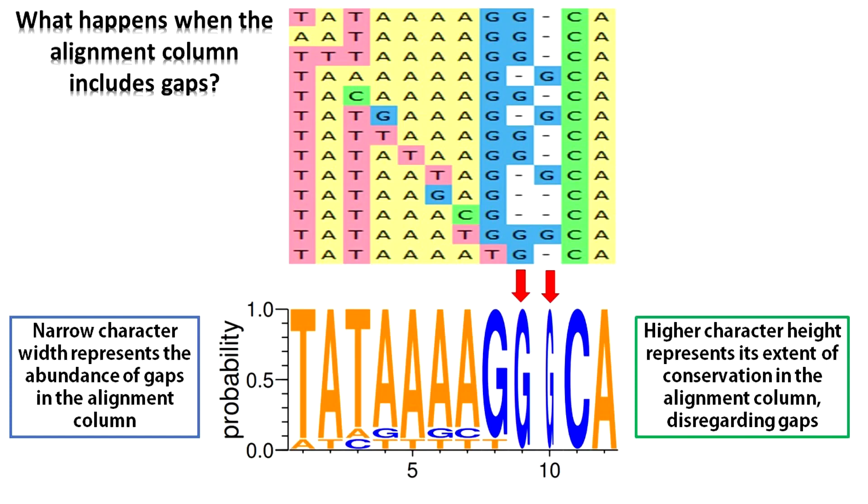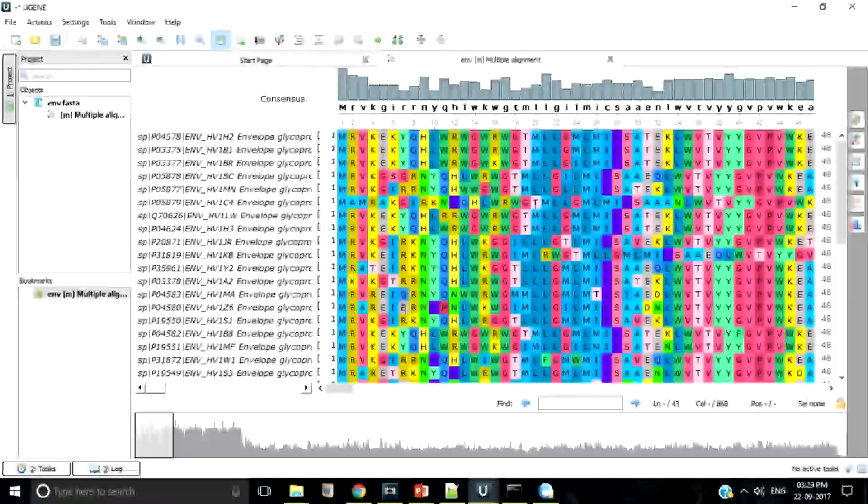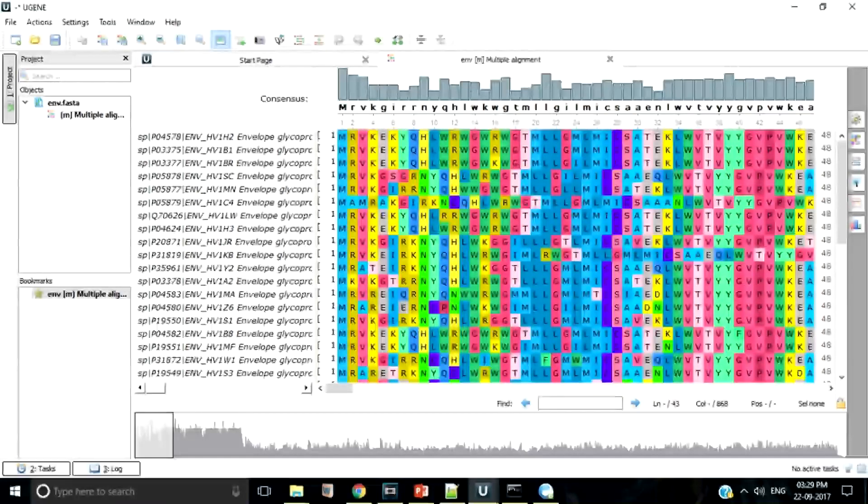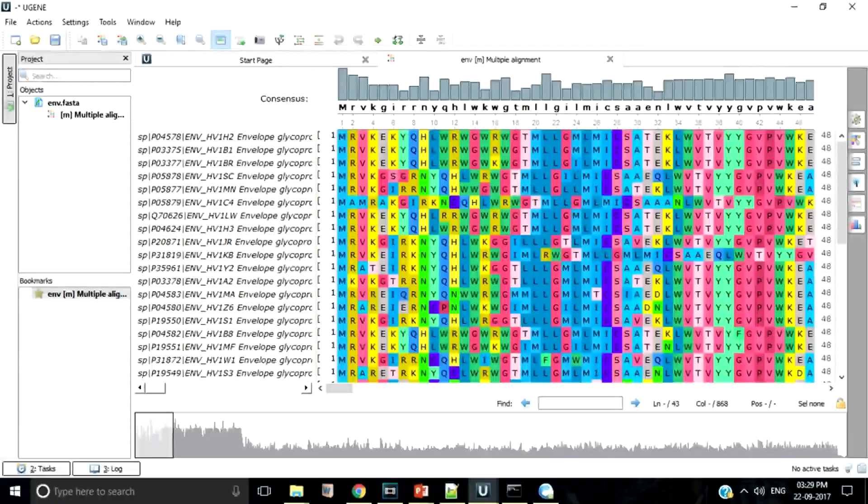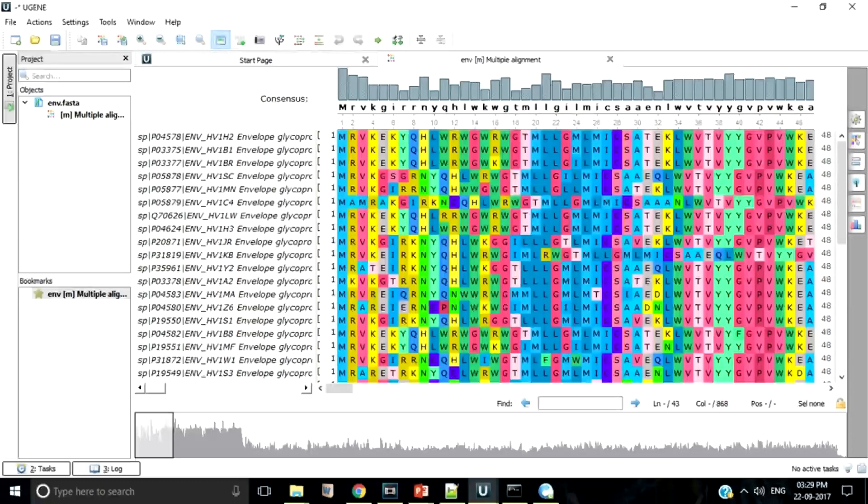So that's enough conceptual background for now. Let me show you how to generate a sequence logo starting from a multiple alignment. Let us start with the envelope glycoprotein sequence alignment of HIV-1 virus we created in our video on multiple sequence alignment.